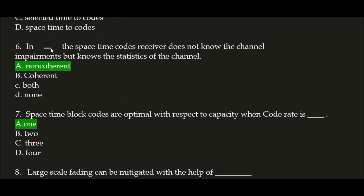Next question: in blank space, the Space Time Codes receiver doesn't know the channel impairments but knows the statistics of the channel. The correct answer is option A, Non-Coherent. In Non-Coherent, the Space Time Codes receiver doesn't know the channel impairments but knows the statistics of the channel.